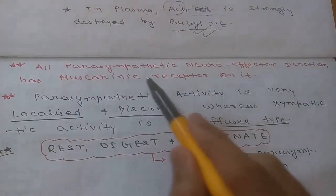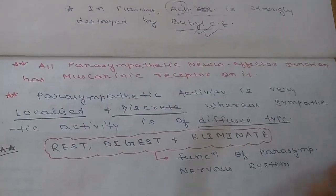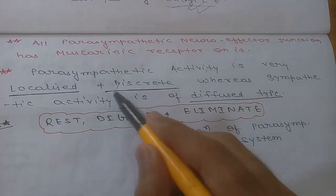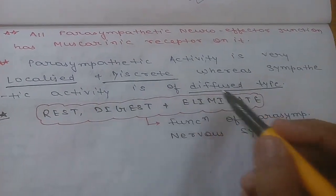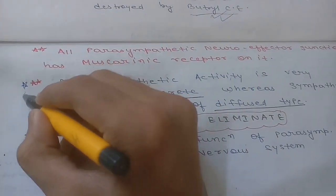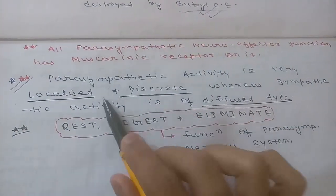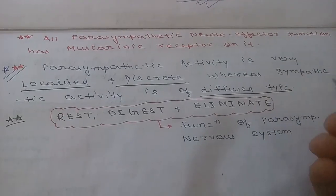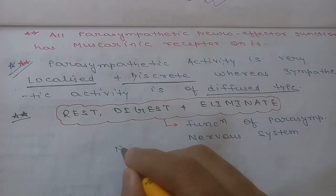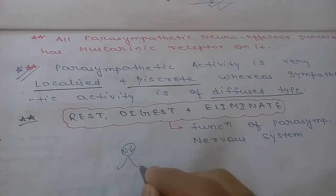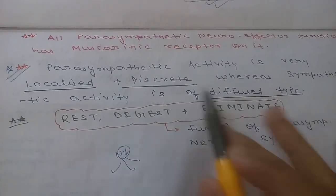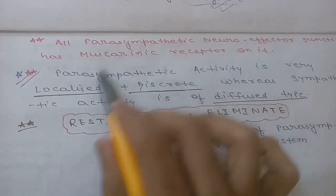All parasympathetic neuroeffector junctions have muscarinic receptors. Parasympathetic activity is very localized and discrete, whereas sympathetic activity is diffuse. When norepinephrine is released into the blood it can stimulate all adrenergic receptors throughout the body, but this does not happen with the parasympathetic system.